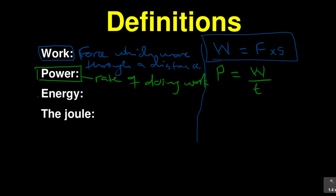The other definition here is energy. Energy is the ability to do work. So energy is the ability to do work, while power is the rate of doing work.